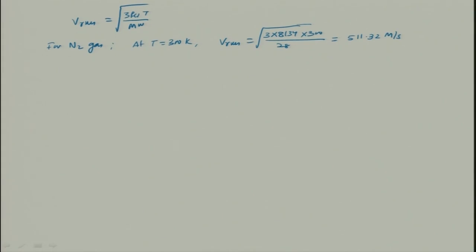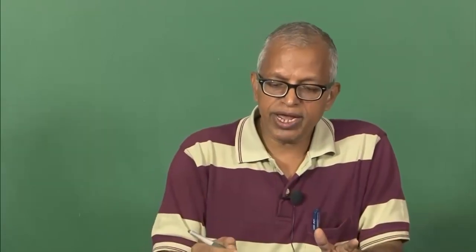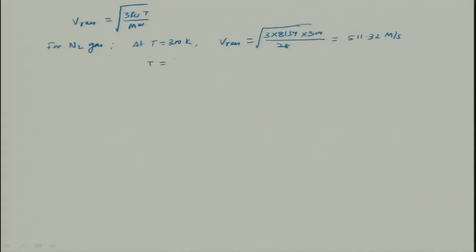The nitrogen molecule is moving at a very high velocity — even higher than the speed of sound. This is a simplified theory; the actual value may be slightly lower, but the order of magnitude would not change — it would not be 50 meters per second. Now, if I increase the temperature to 1200 Kelvin, V_rms becomes 1022.64 meters per second, because temperature increased by 4 times and the square root of 4 is 2.